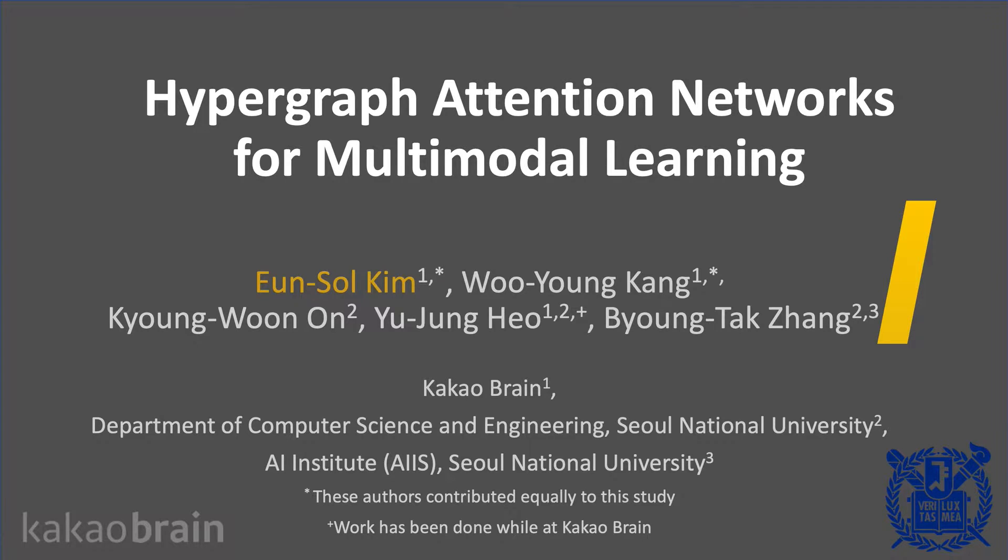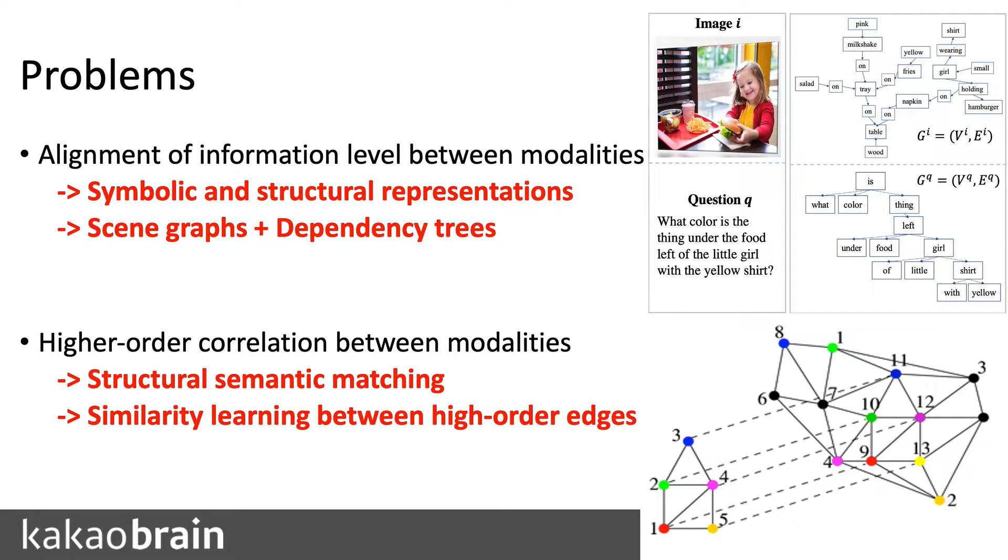This work is about a new graph neural algorithm to learn representations of multimodal data. We postulate two fundamental problems under conventional multimodal learning algorithms.